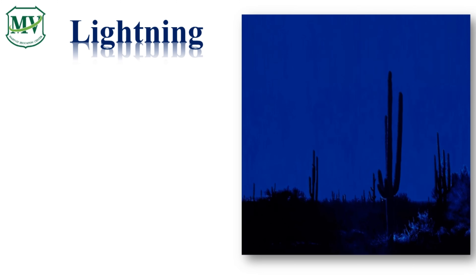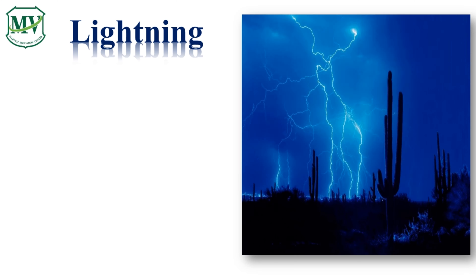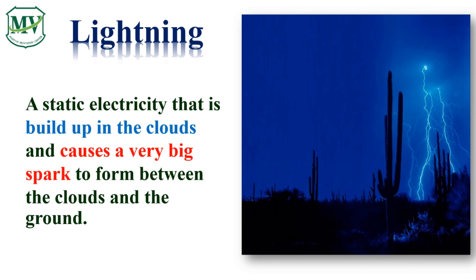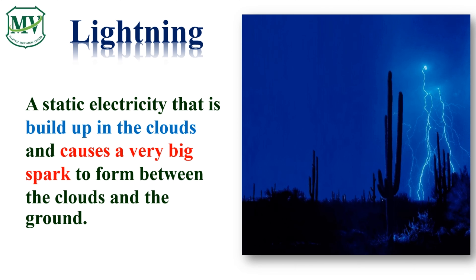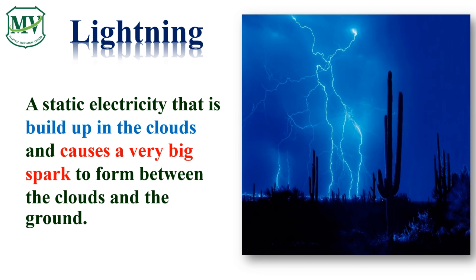Lightning. Why do you think there is lightning? Lightning is a static electricity that is built up in the clouds and causes a very big spark to form between the clouds and the ground. Lightning happens as a result of the building up of charges in the clouds.